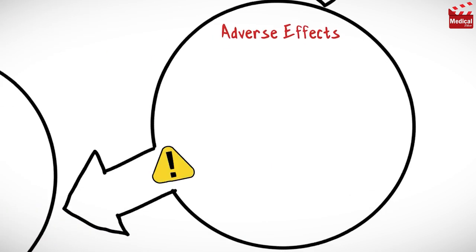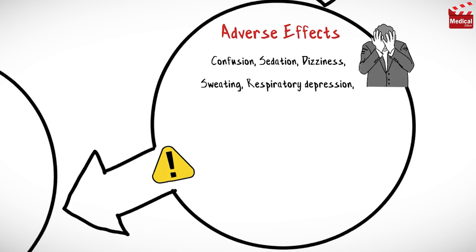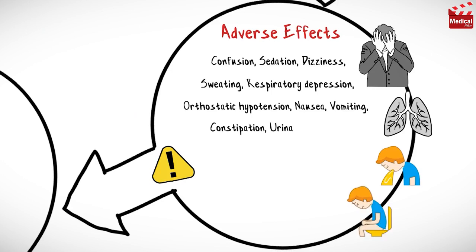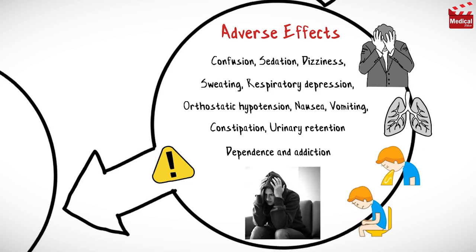Oxycodone may cause confusion and sedation, dizziness, sweating, respiratory depression, orthostatic hypotension, nausea and vomiting, constipation and urinary retention. It may also cause physical and psychological dependence and addiction.